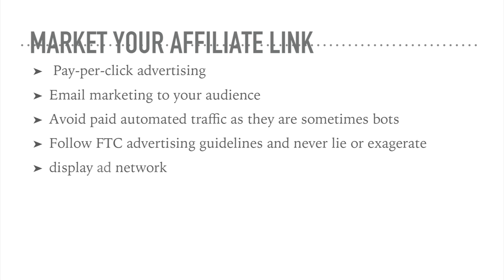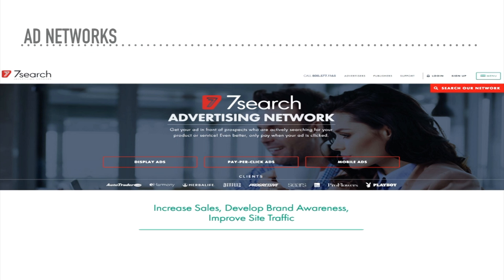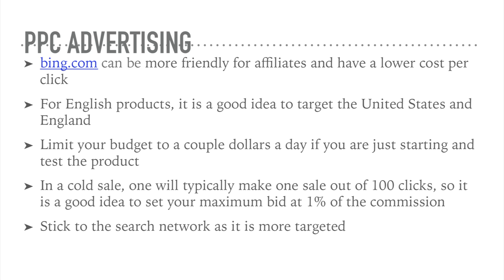You can pick different display ad networks — if you go to Google and type in 'ad network,' you'll see a bunch to choose from. You might be able to get a better, lower pay-per-click rate that's more effective. Here's an example of an ad network like 7Search where you can buy different types of ads. Bing also has a pay-per-click advertising department that can be friendlier to affiliate marketers and you might get a better deal compared to more popular search engines.